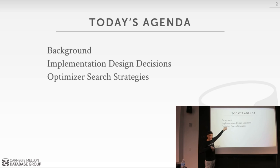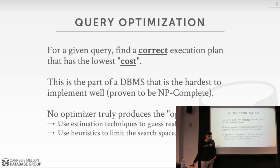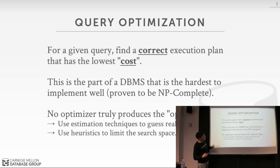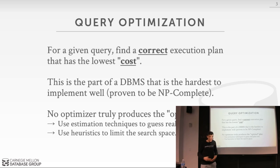We'll talk about the history of search strategies so you understand why the Cascades unified search model is one of the best approaches. The basic idea of query optimization is that the application gives us a query in a declarative language, telling us what result they want, and it's up to us to generate a query plan that computes it. For a given query, we want to find a correct execution plan with the lowest cost — I'm emphasizing both 'correct' and 'cost.'